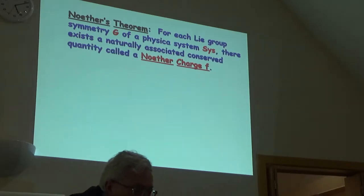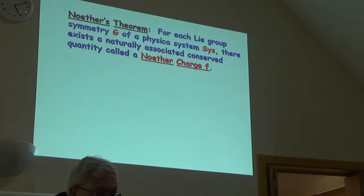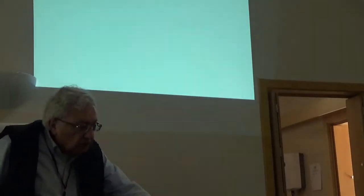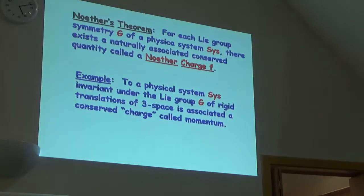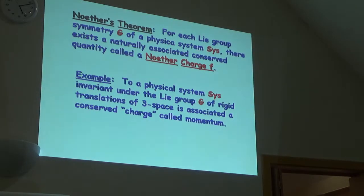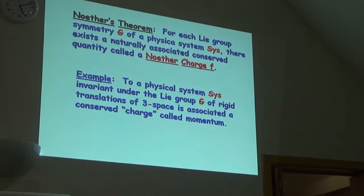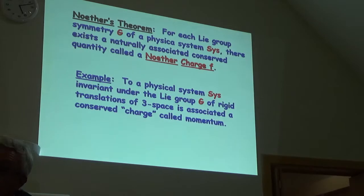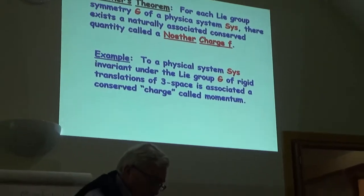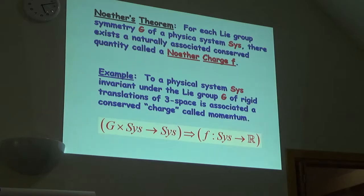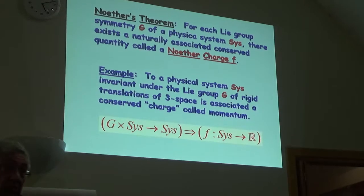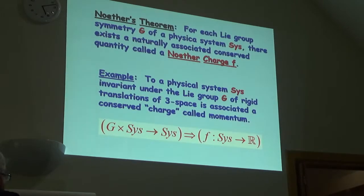For each Lie group symmetry, G, of a physical system, there exists a naturally associated conserved quantity called a Noether charge. An example of this, and we're all aware of, to a physical system invariant under Lie group G of rigid translations of three space is associated a conserved charge which we all know as momentum. That's true. The physical system is invariant under rigid translations of three space. Well, we're going to do essentially the same thing with quantum entanglement. You can think of quantum entanglement as a result of a symmetry.